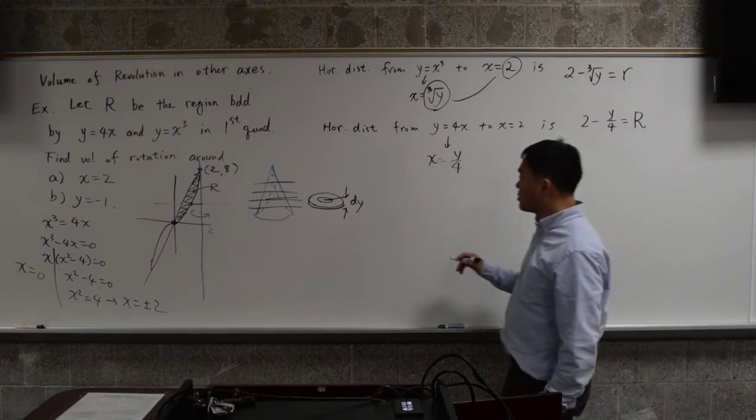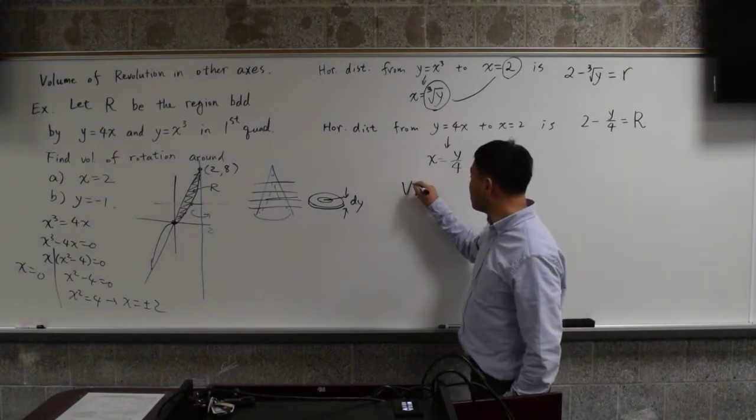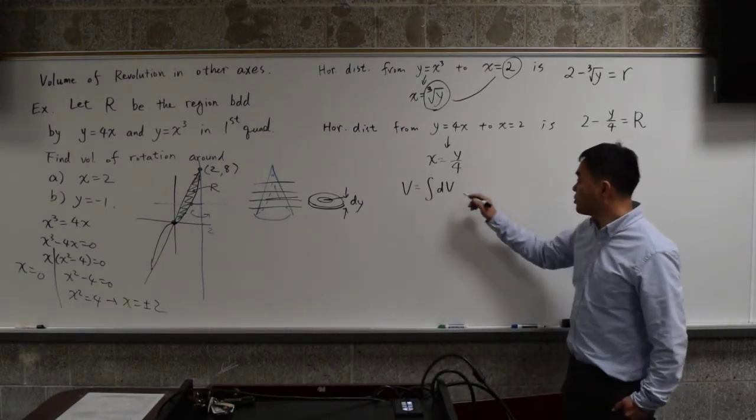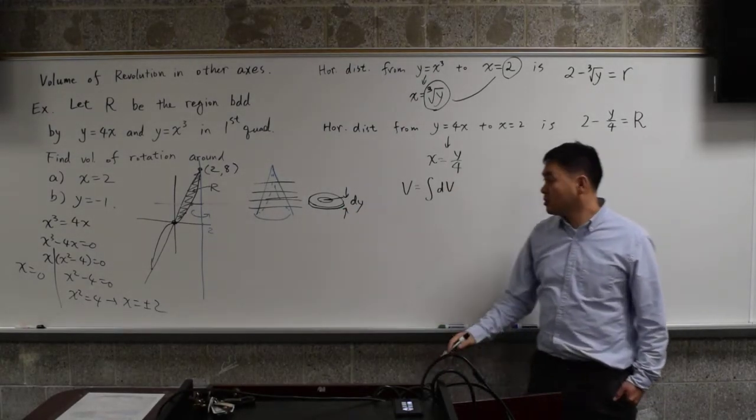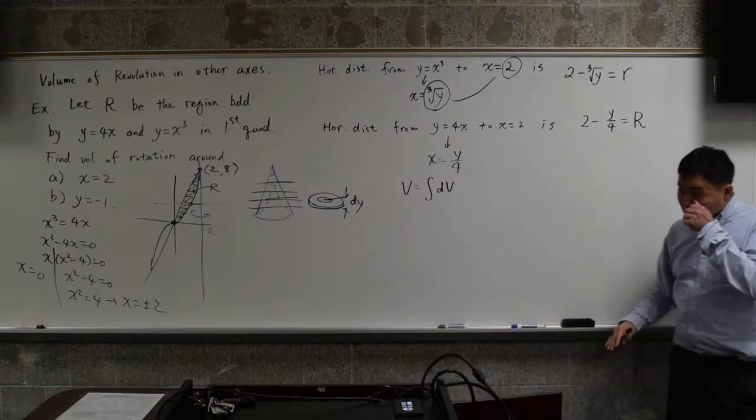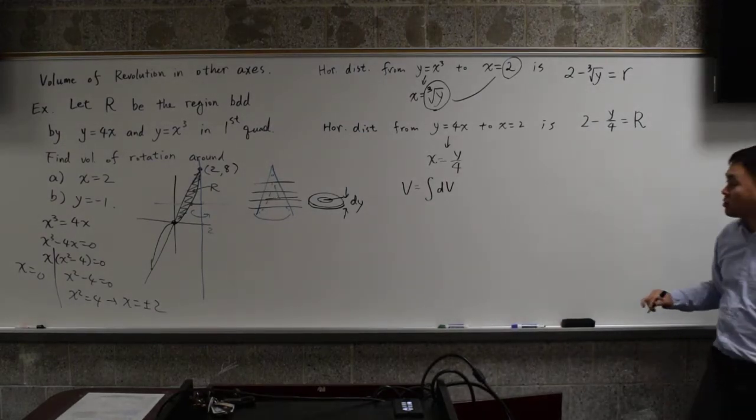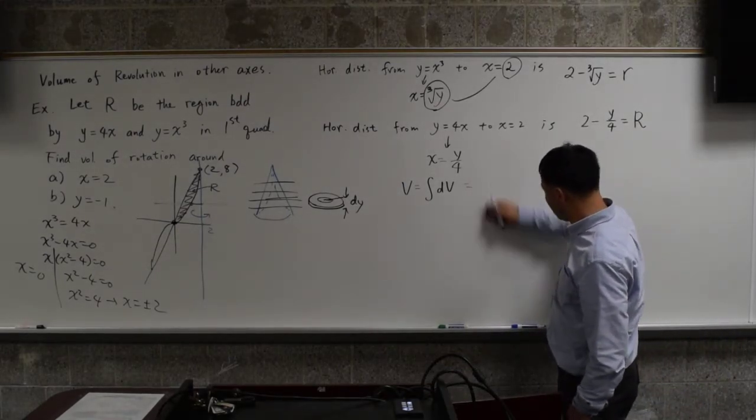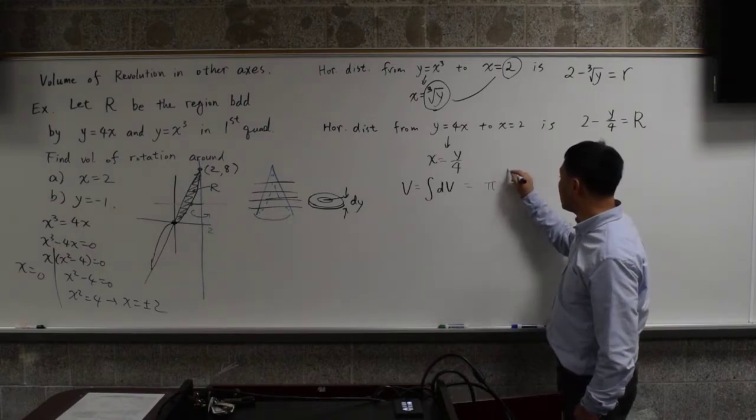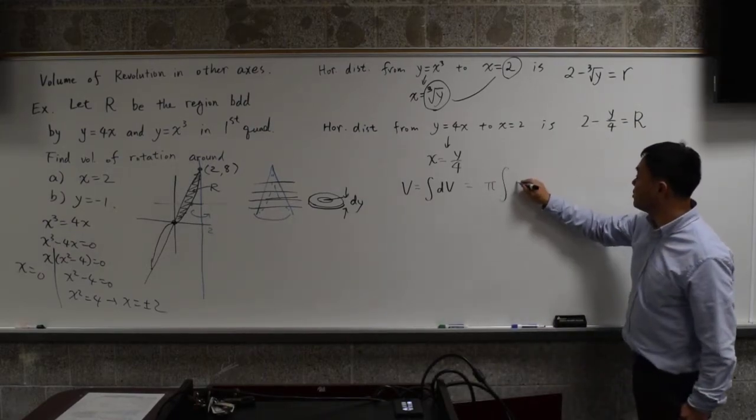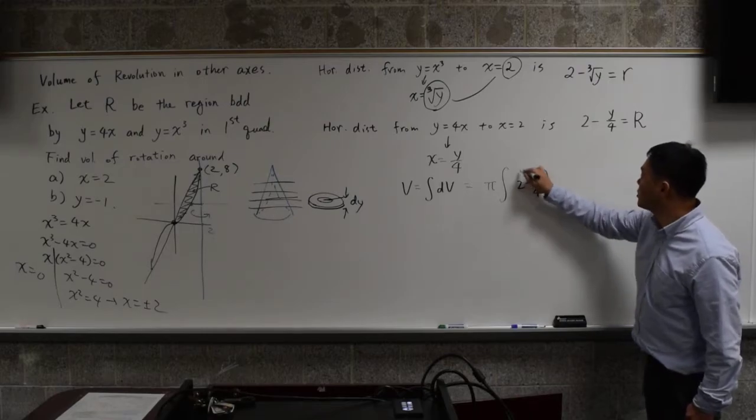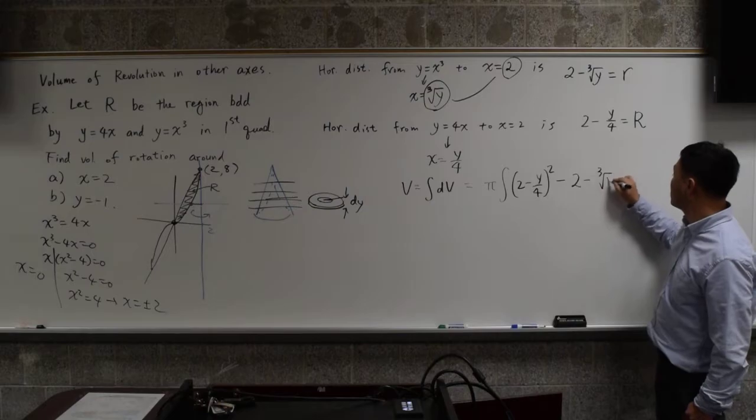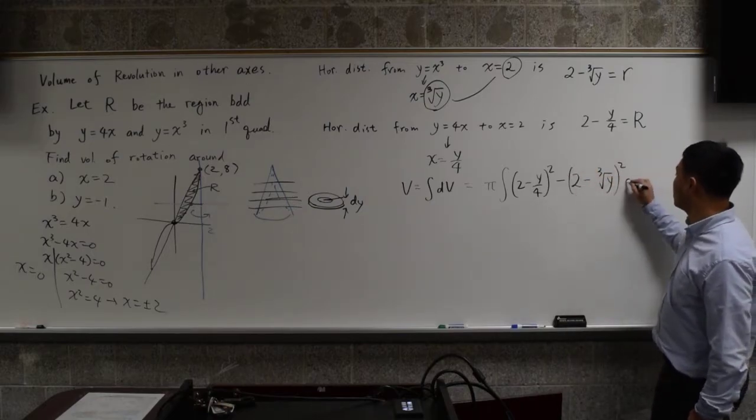Then you're ready to write down the integral. Volume is sum of small volumes, which are made up of these very thin cross-sections, very thin washers. Those washers are made up of pi times big R squared, big R squared minus the small r squared, dy.